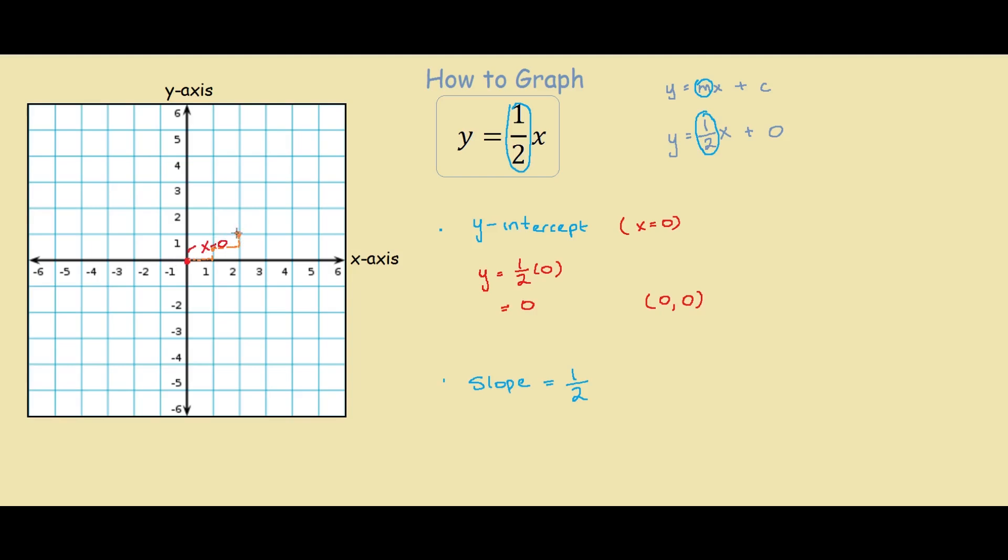So now we have two points on our graph. We can connect these two dots and we should have our graph for y equals to half x. And that's our answer. The line crosses the origin with a y-intercept of zero and has a slope of one half.